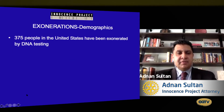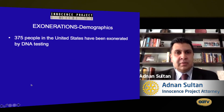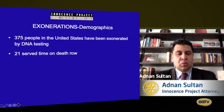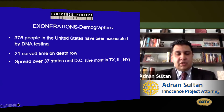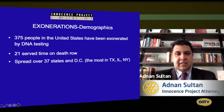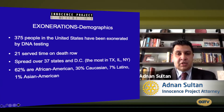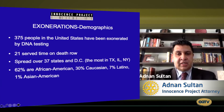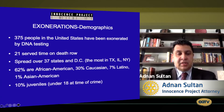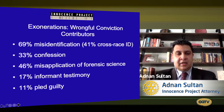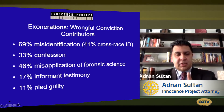We've been able to exonerate 375 people through DNA testing. 21 have served time on death row. Our work spans 37 states and D.C. Of those exonerated, 62 percent are African American, 30 percent Caucasian, 7 percent Latino, and 1 percent Asian. 10 percent were juveniles.